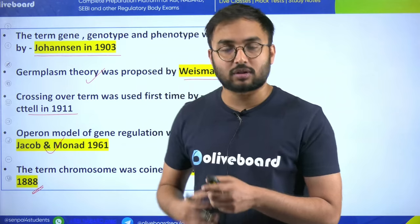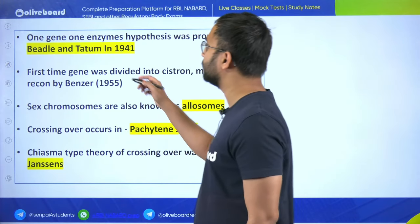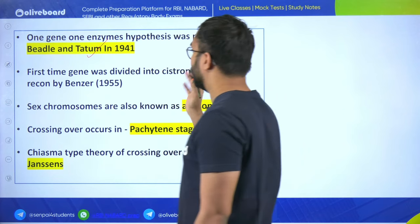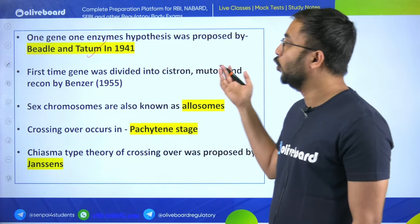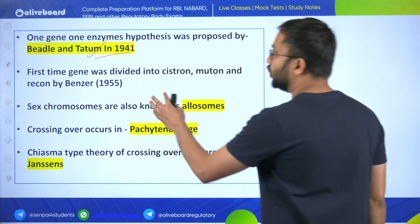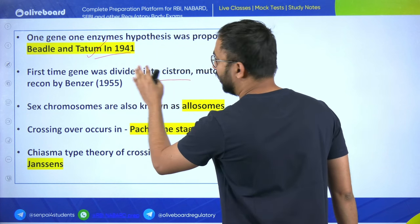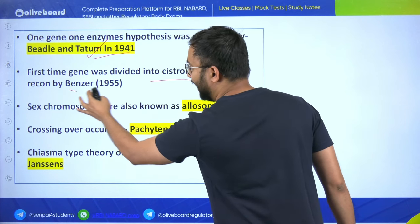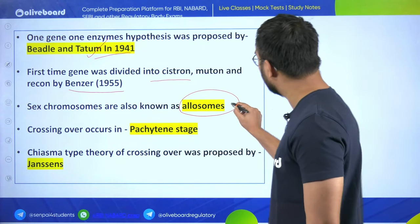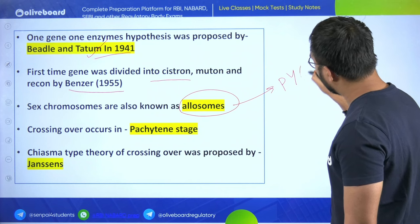The one gene-one enzyme hypothesis was proposed by Beadle and Tatum in 1941. For the first time, gene was divided into cistron, muton, and recon by Benzer. Sex chromosomes are also known as allosomes - this is one of the previous year questions of CGRAO.